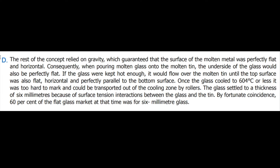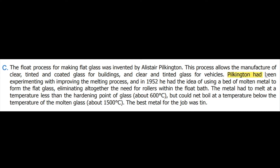Paragraph D: the concept relied on gravity, which ensured that the surface of molten metal was perfectly flat and horizontal. Consequently, when pouring molten glass onto the molten tin, the solidifying glass would also be perfectly flat. Pilkington had been experimenting with improving the melting process, and in 1952 he had the idea of using a bed of molten metal to form the flat glass, eliminating altogether the need for rollers in the float bath.